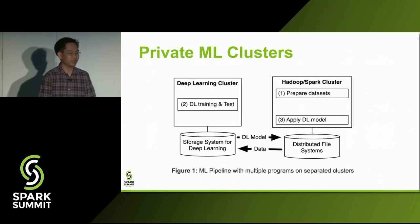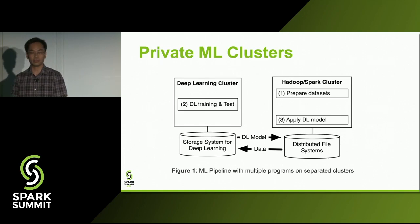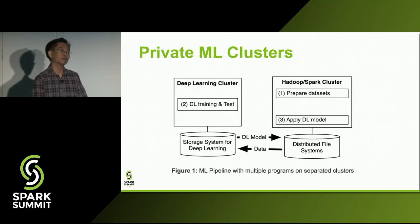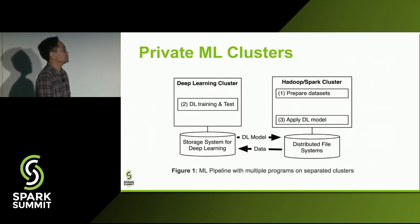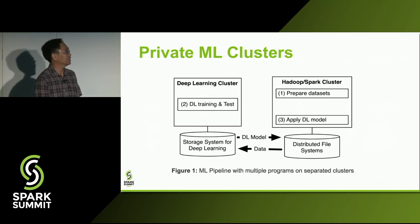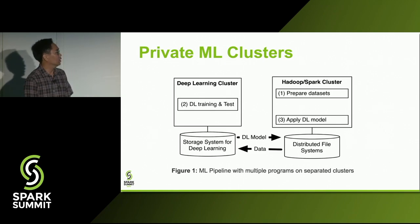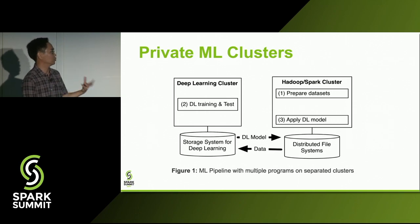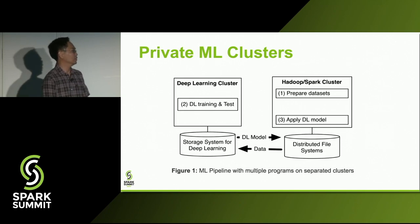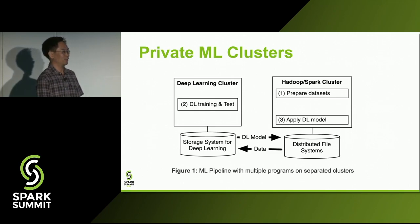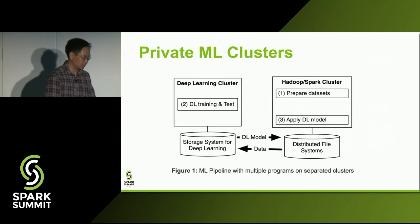Without TensorFlow on Spark, you would end up with a production Hadoop Spark cluster getting data from your feeds, and most people would have built a custom deep learning cluster on the side running TensorFlow or Caffe. You'd prepare your datasets on the Hadoop cluster in Spark, copy that data to your deep learning grid, do your experiments and training, and then copy the model back to your production cluster. Obviously, that's not ideal.